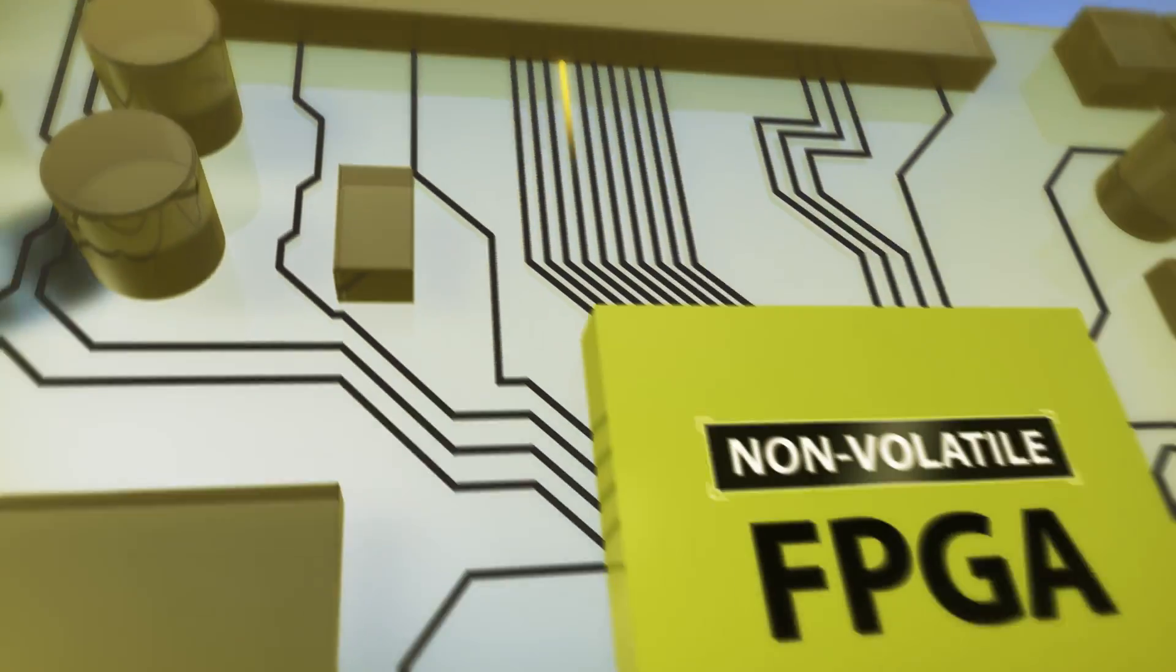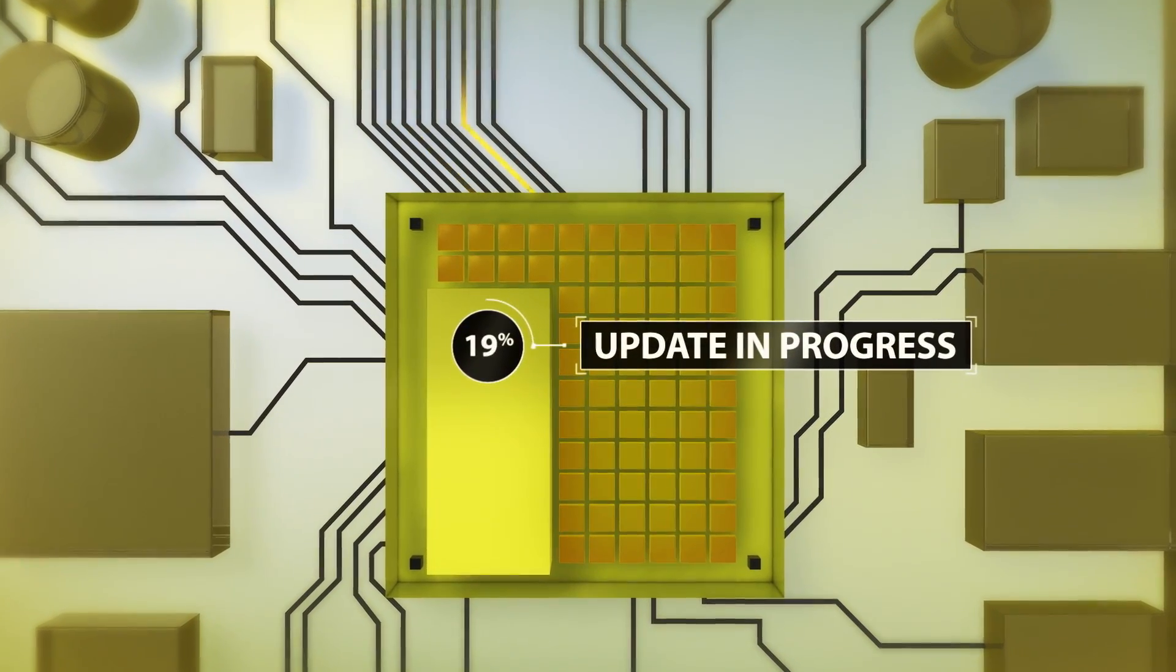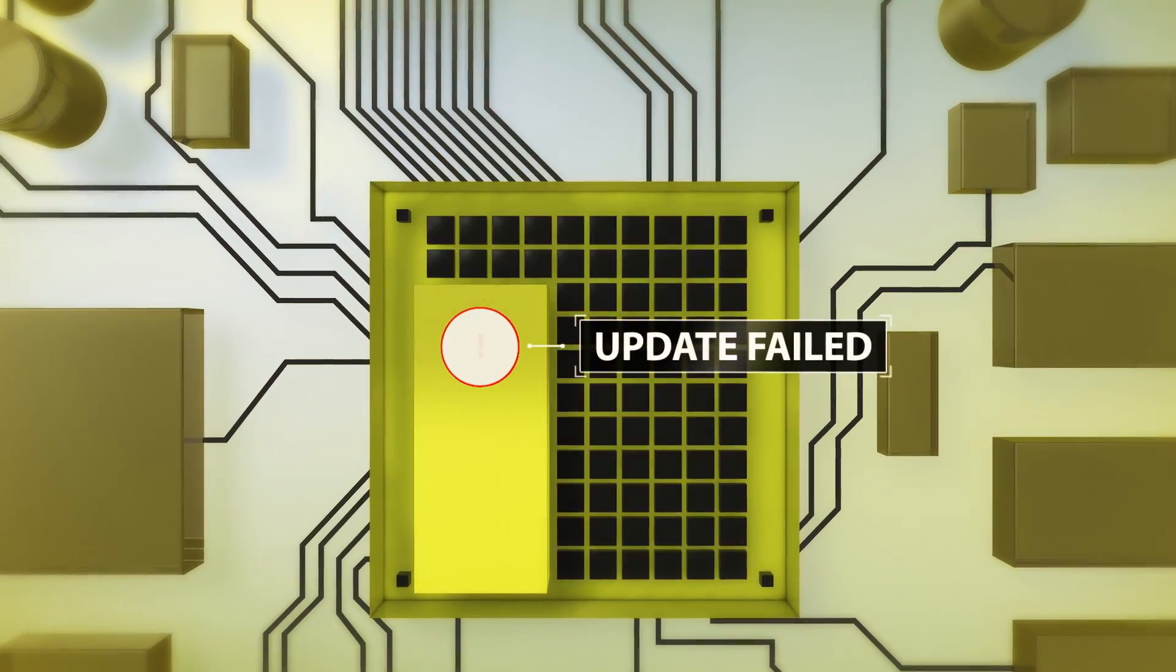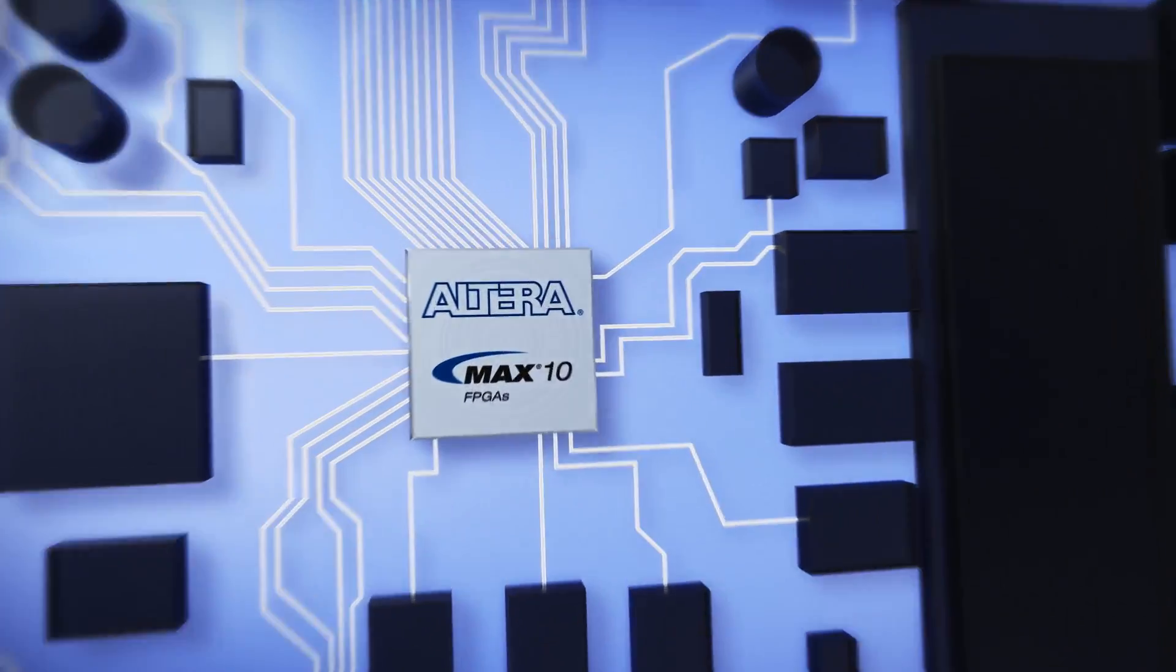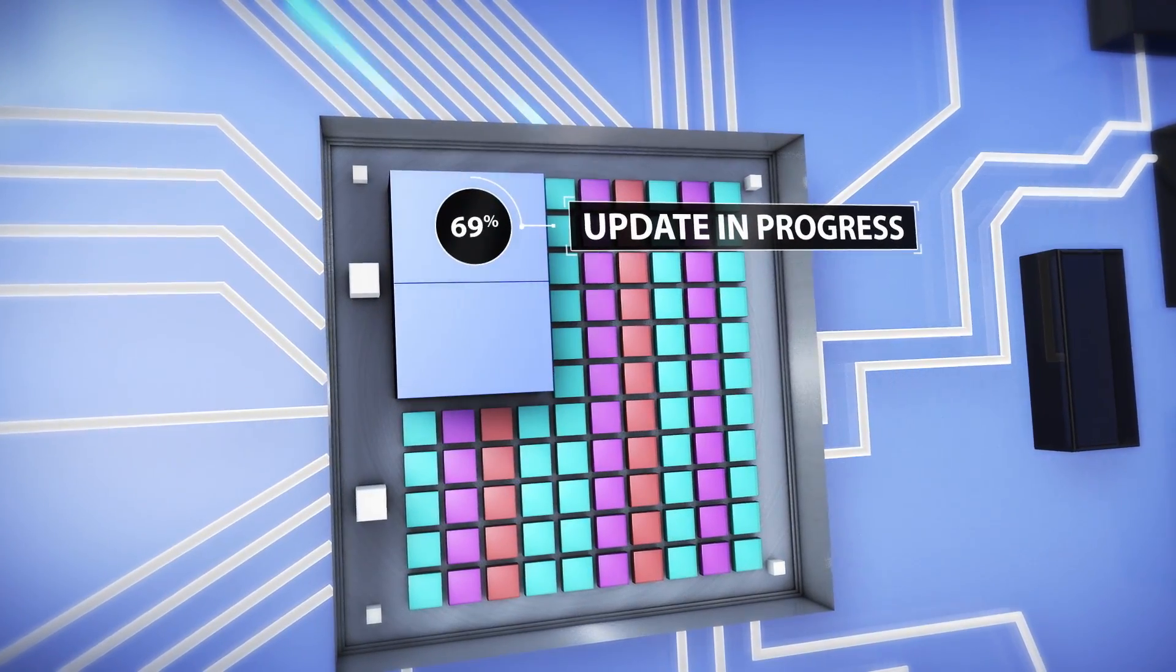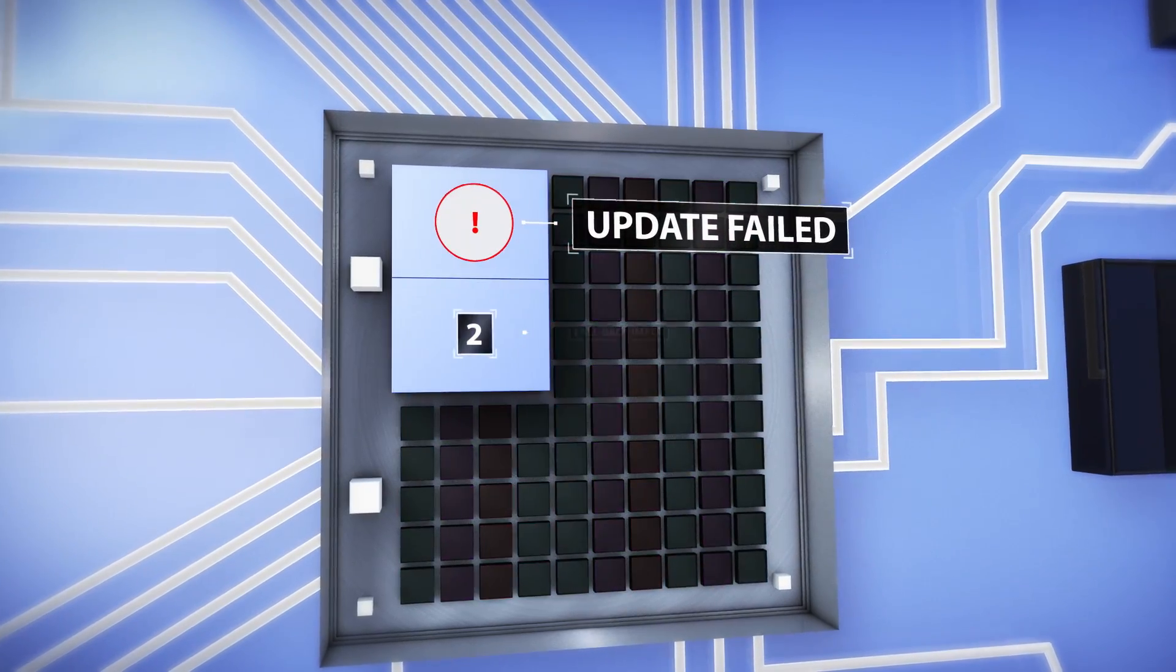And unlike other non-volatile FPGAs and CPLDs where interruption during image upgrades can bring down the entire system, the MAX 10 FPGA updates safely and reliably by keeping a fallback image.